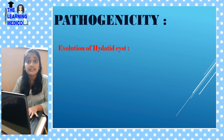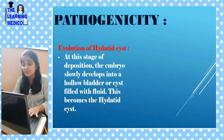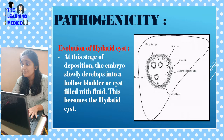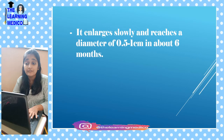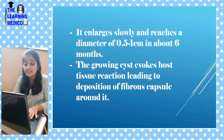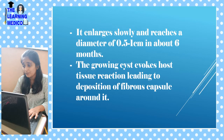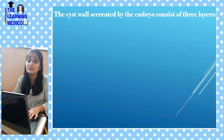Pathogenesis — evolution of hydatid cysts. At the site of deposition, the embryo slowly develops into a hollow bladder, a cyst filled with fluid — this is the hydatid cyst. It enlarges slowly, reaching a diameter of 0.5 to 1 cm in about 6 months. This growing cyst evokes a host tissue reaction leading to deposition of a fibrous capsule. The cyst wall secreted by the embryo consists of three layers.